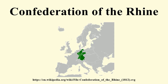The Confederation of the Rhine was a confederation of client states of the first French Empire. It was formed initially from 16 German states by Napoleon after he defeated Austria and Russia in the Battle of Austerlitz. The Treaty of Pressburg, in effect, led to the creation of the Confederation of the Rhine. It lasted from 1806 to 1813. The members were German princes from the Holy Roman Empire, later joined by 19 others, altogether ruling over 15 million subjects, providing a significant strategic advantage to the French Empire on its eastern front.